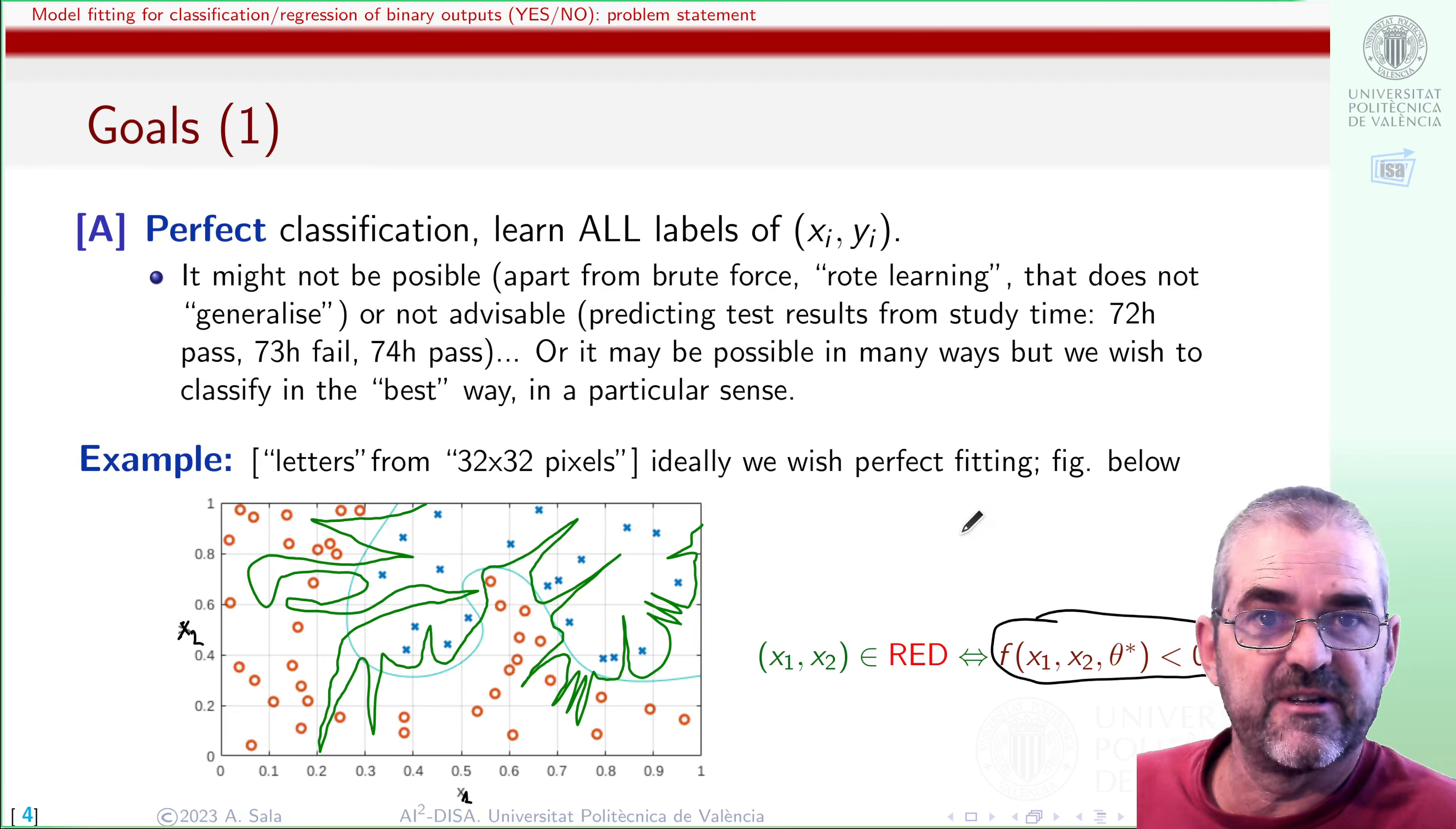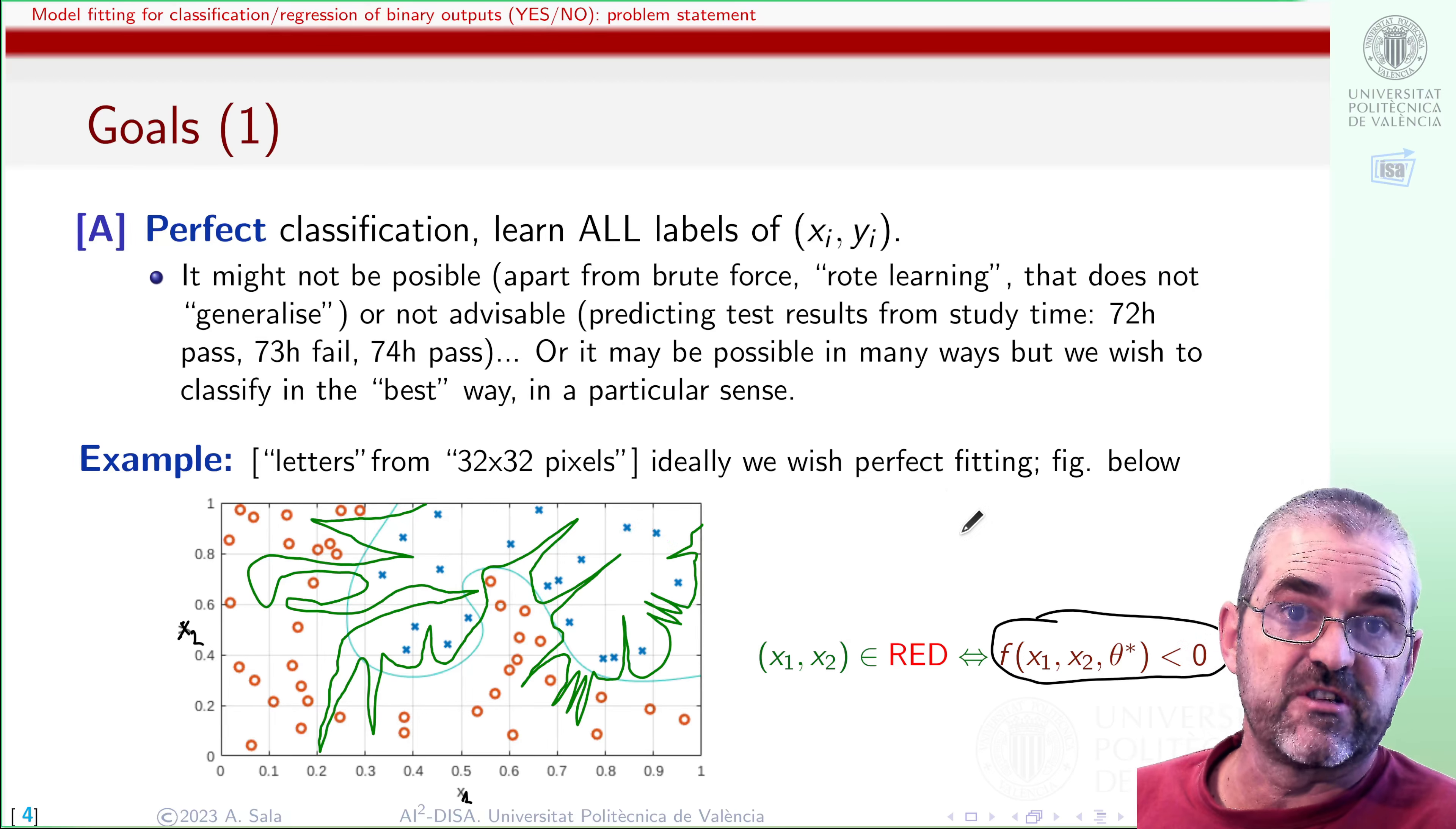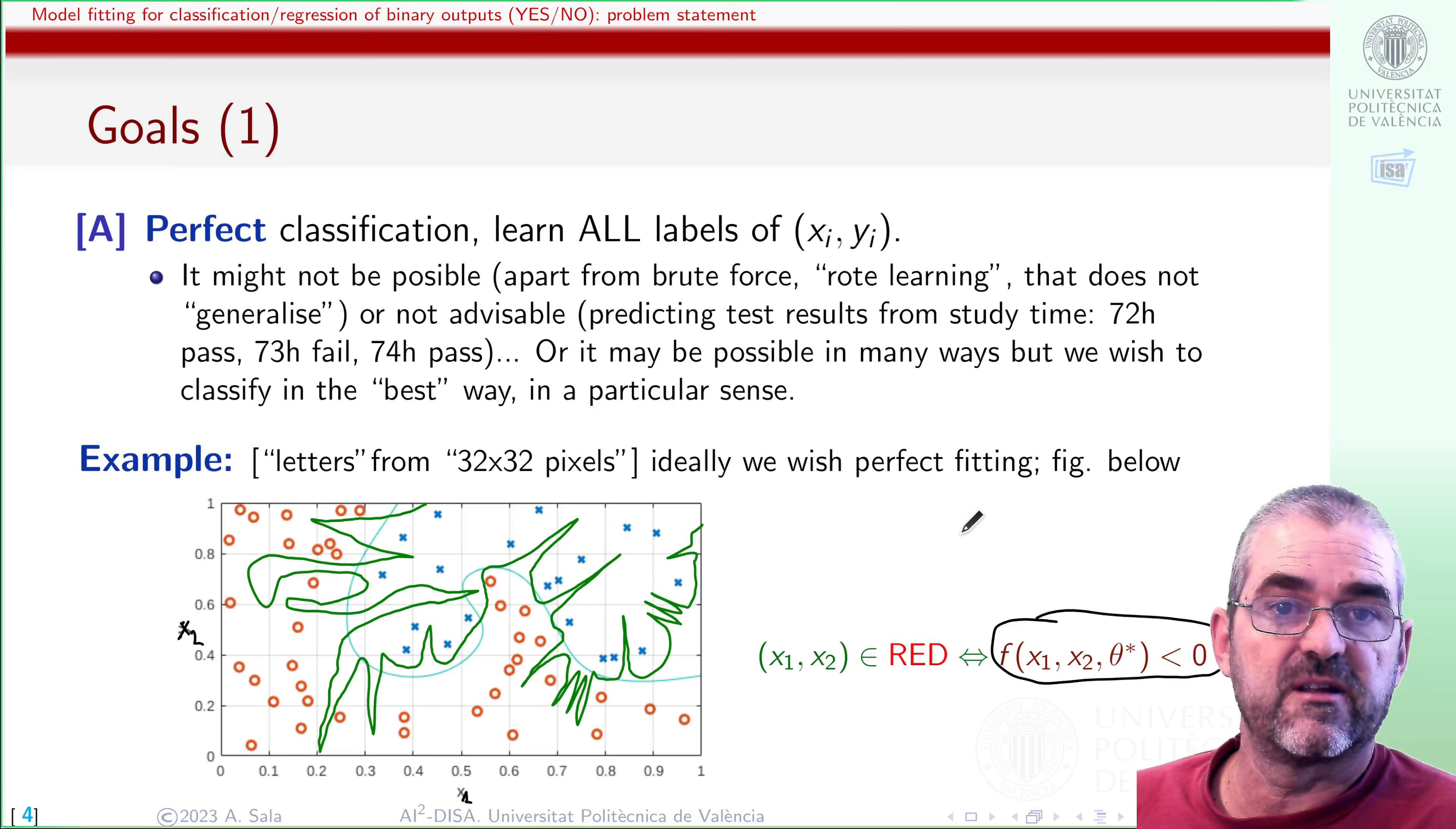They both perfectly do the job, but somehow, the cyan threshold seems smarter than the green one. In general, the green stuff will be nonsense, and the cyan boundary may be good. So, if perfect classification is possible and not unique, then we must tell in a formal way which is the most desirable shape for the classification boundary. And then we have some kind of support vector machine stuff to do that, for instance, it's one of the solutions.